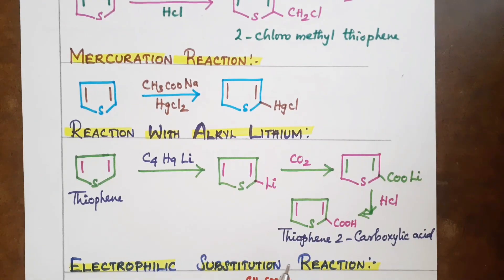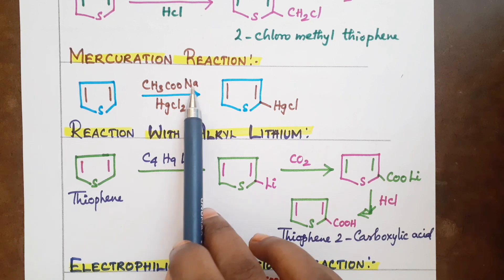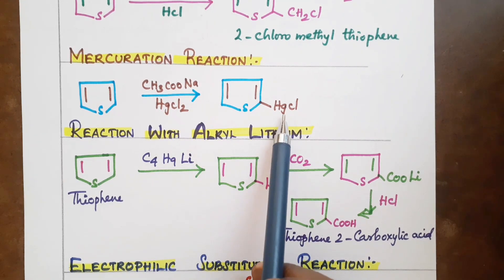Mercuration reaction: mercury chloride in presence of sodium acetate produces the mercurated product.